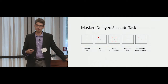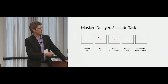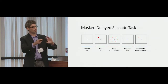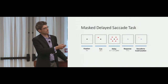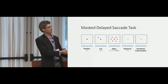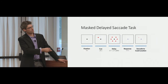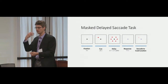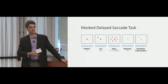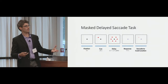For the task, we used a masked delayed saccade paradigm. The animal fixates centrally for 500ms, receives a cue indicating which location to hold in working memory, then that cued location is masked by all possible other locations. After a variable delay of 1.7 to 2.7 seconds, the mask disappears, the fixation dot changes color, and the animal makes a saccade to the remembered location for a juice reward.